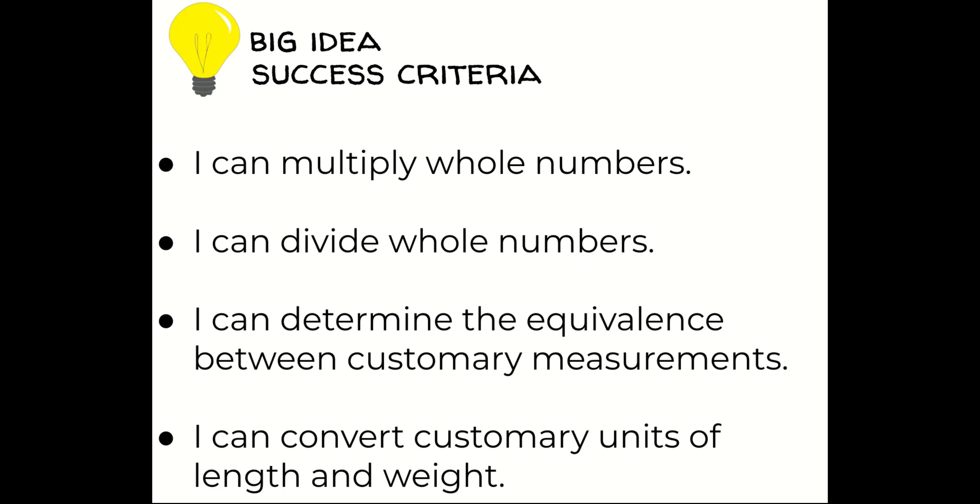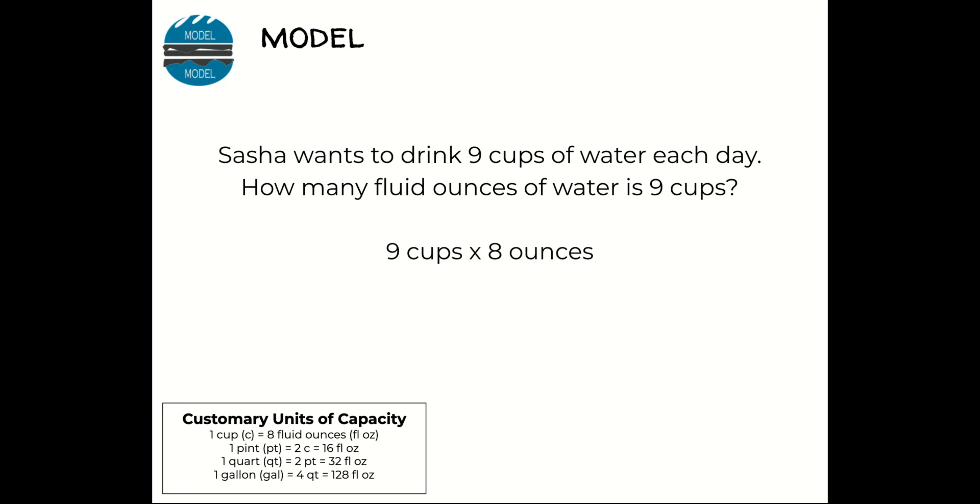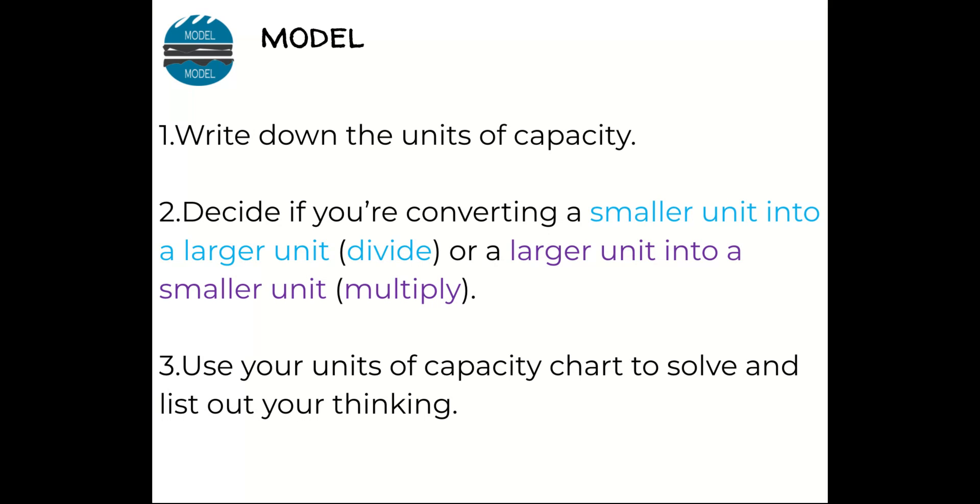Here's the first example. Sasha wants to drink nine cups of water each day. How many fluid ounces of water is nine cups? Well, if I look at my chart at the bottom for my customary units of capacity, I can see that one cup equals eight fluid ounces. So I would multiply nine cups times eight ounces to determine the number of ounces. My answer is 72 ounces or 72 fluid ounces.